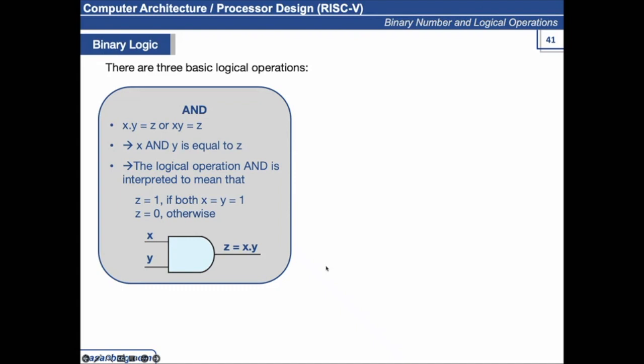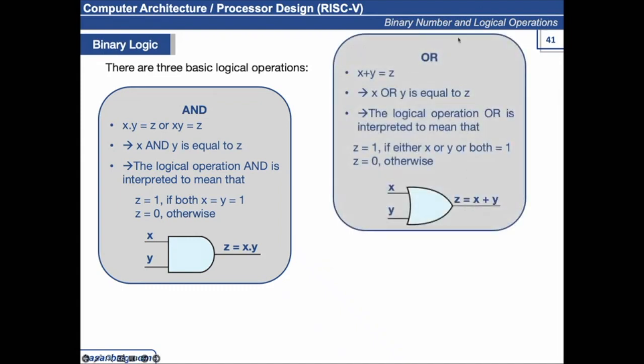Similarly, we have another basic logical operation called OR operation. So x plus y, plus is not an arithmetic operator here, it's a logical operator. So x plus y equals z. We can also sometimes represent it with the OR symbol. And it simply says if either of the input is one, then the output is one. It could be more than two inputs. We can have three input OR gate, we can have four input OR gates. So if any of the input is one, the output would be one.